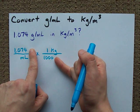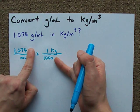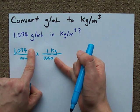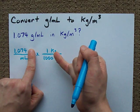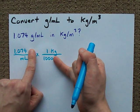And if I do this on my calculator, 1.074 times one divided by one thousand, I'm going to get an answer in kilograms per milliliter. Pretty cool.